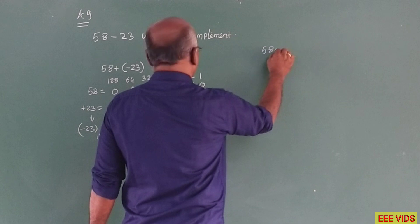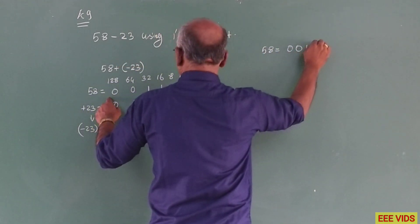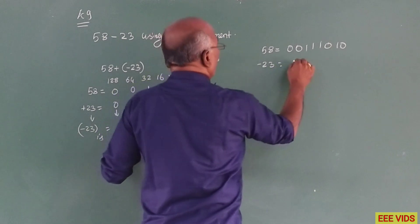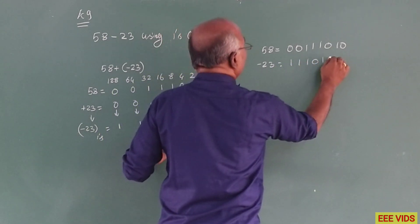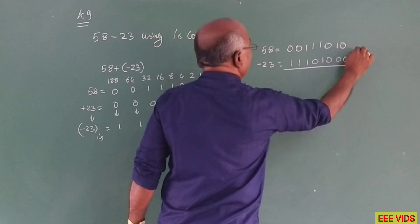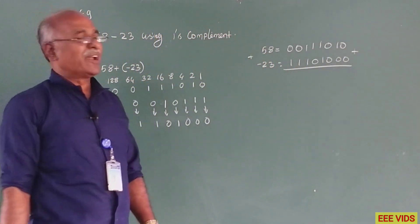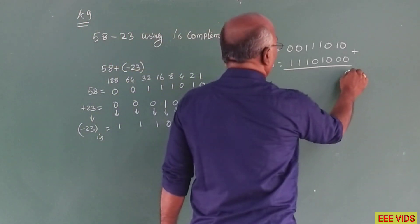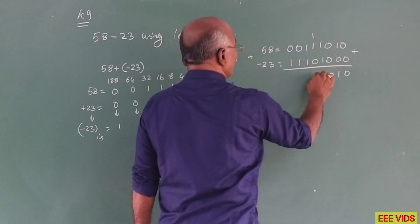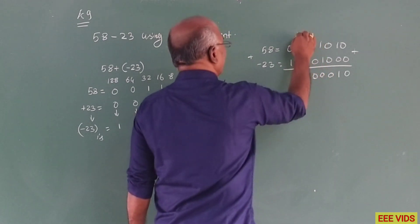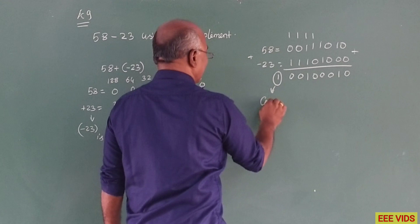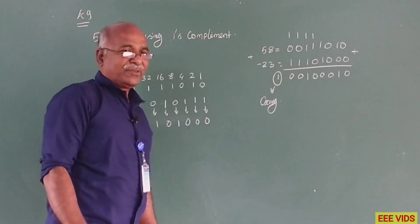58 in binary is 0, 0, 1, 1, 1, 0, 1, 0. We will add. So plus 58 plus of minus 23: adding the bits — 1 plus 1 is 0 carry 1, 1 plus 1 is 0 carry 1, 1 carry, 0, 1 carry, 0, 1 carry, 0 carry. So there is an extra one bit carry out.